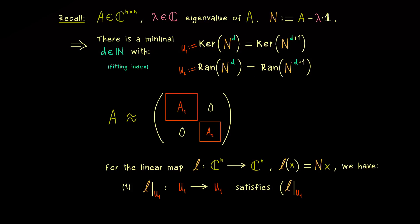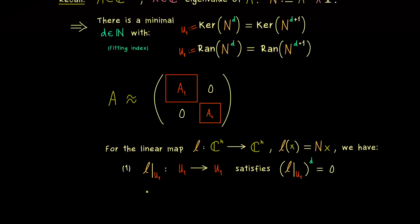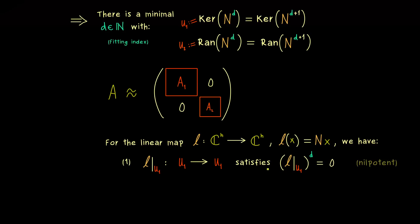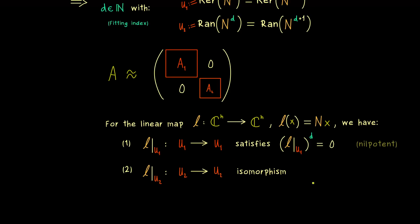We know even more: if we apply this map D times, we will definitely reach the zero vector. This is clear because U1 is exactly defined as this kernel. So the restriction of L to U1 is a nilpotent map — we can find a power such that the map becomes the zero map, and this is the minimal such power. On the other hand, the second restriction, to U2, is definitely not nilpotent. In fact, it maps the range into the range, and there it is a bijective map — which is what we call an isomorphism.